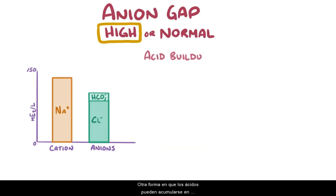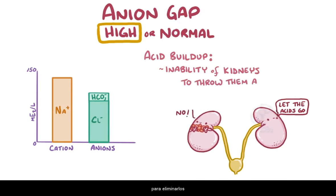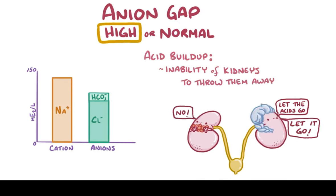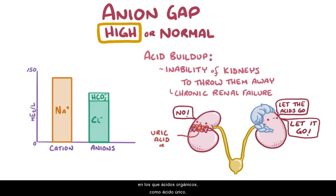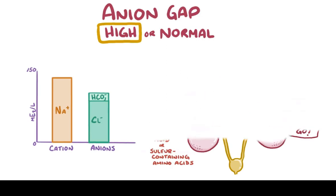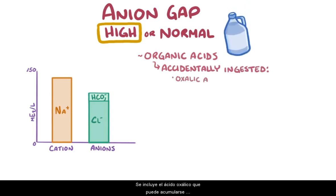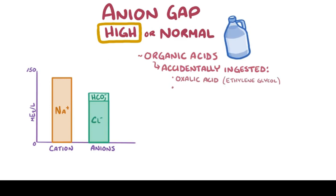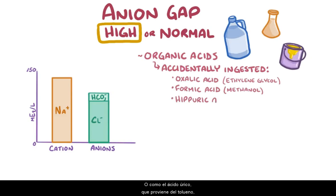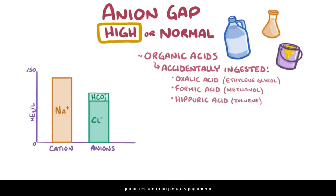Another way acids can build up in our blood is due to an inability of the kidneys to excrete them, even though they are produced in normal amounts. This can happen in cases of chronic renal failure, in which organic acids like uric acid or sulfur-containing amino acids can accumulate because they aren't excreted normally. In other cases, organic acids don't come from inside our bodies at all, but instead they are accidentally ingested. These include oxalic acid, which can build up after accidental ingestion of ethylene glycol, a common antifreeze, as well as formic acid, which is a metabolite of methanol, a highly toxic alcohol, or hippuric acid, which comes from toluene, which is found in paint and glue.